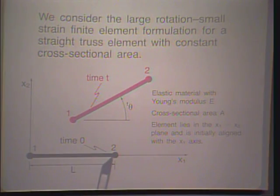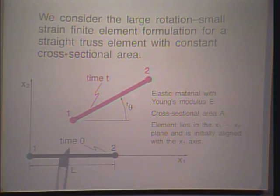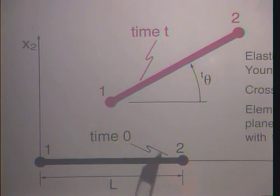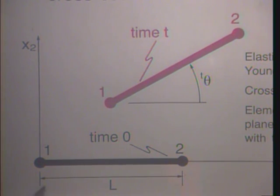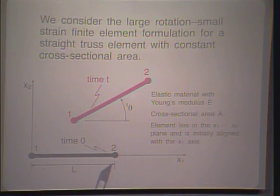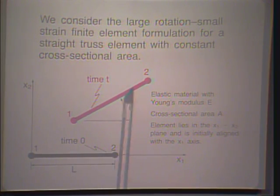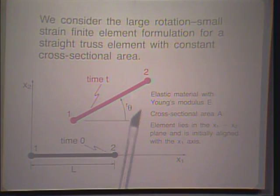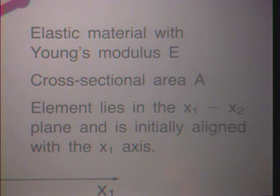Here we have a typical element. We align the two-noded truss element with the x1 axis in its original configuration. The element goes through large deformations and a large rotation theta. Node 1 moves from its original position, as does node 2. The length of the element is L in the original configuration and also L at time t. We use Young's modulus, assume an elastic material, and the cross-sectional area is A. The element lies in the x1, x2 space.